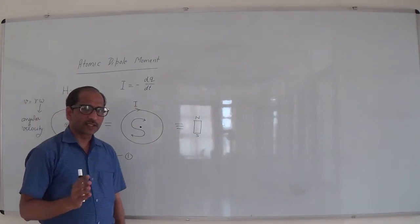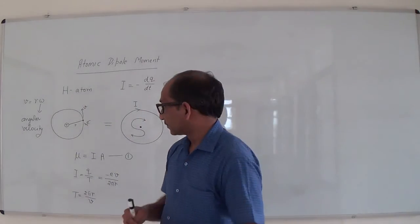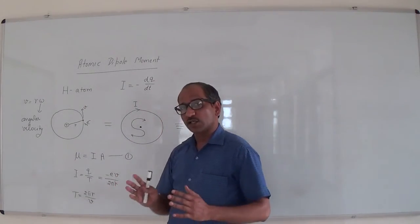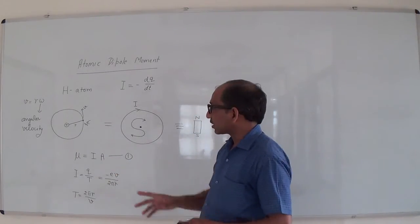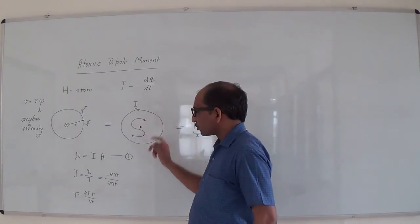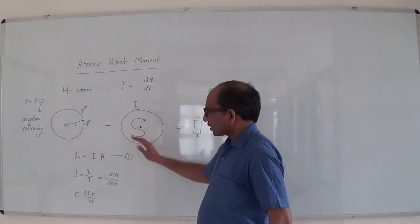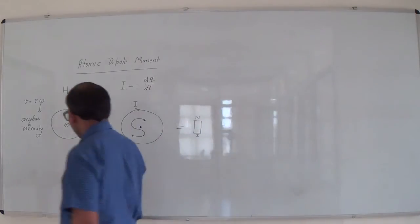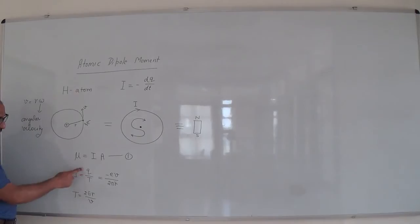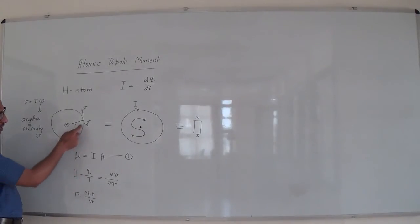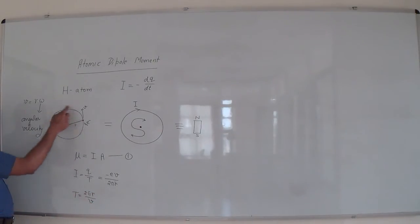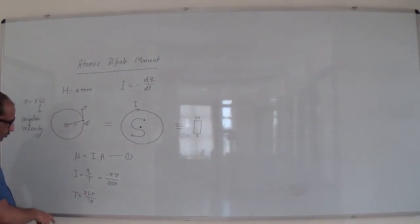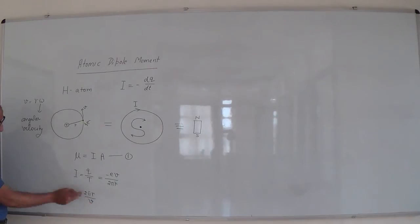The next point is the atomic dipole moment. Atomic dipole moment mu is equal to I times A, where I is the current flowing in the current loop and A is the area. The current I is defined by Q/T, where Q is the charge of the electron and T is equal to 2πR/v, that is the time period for this electron. R is the radial distance and v is the velocity.